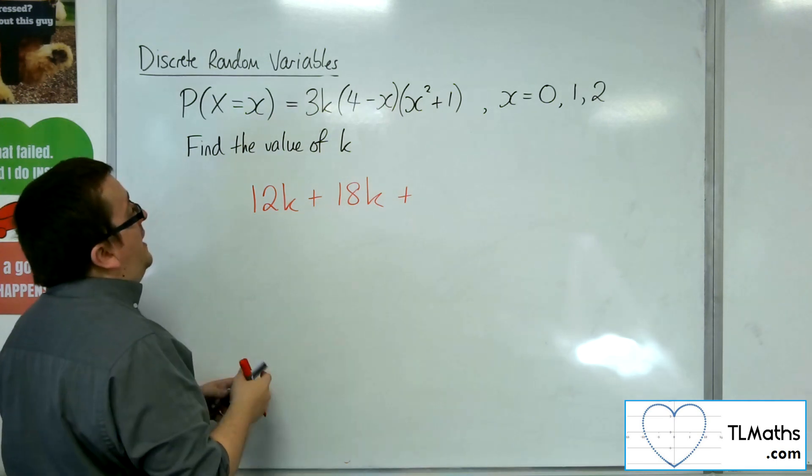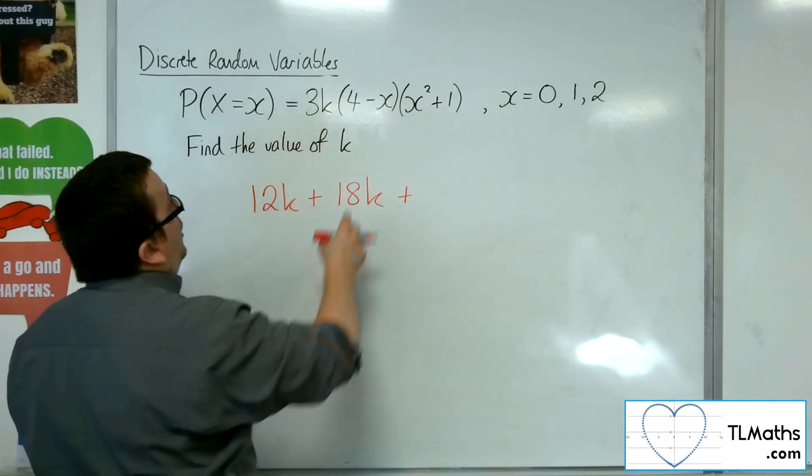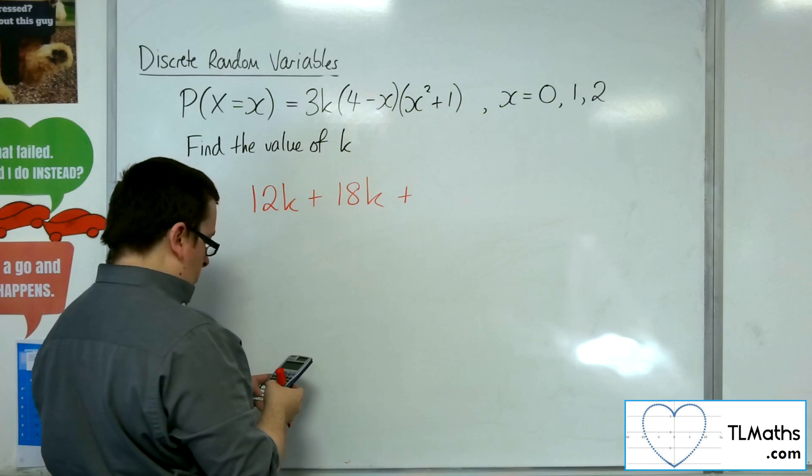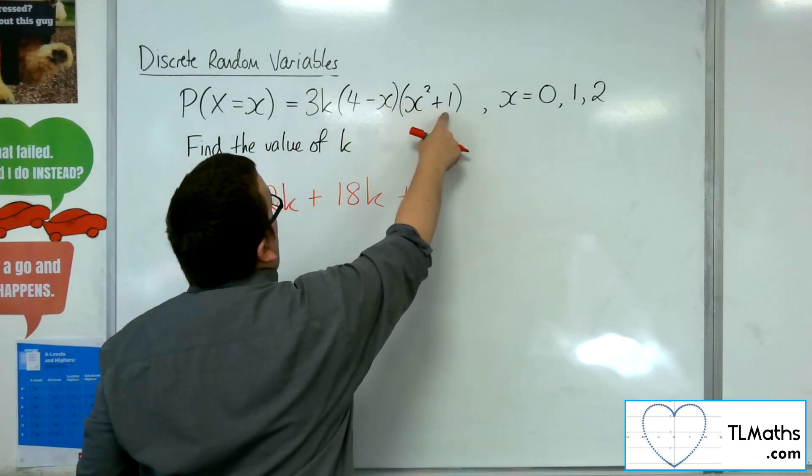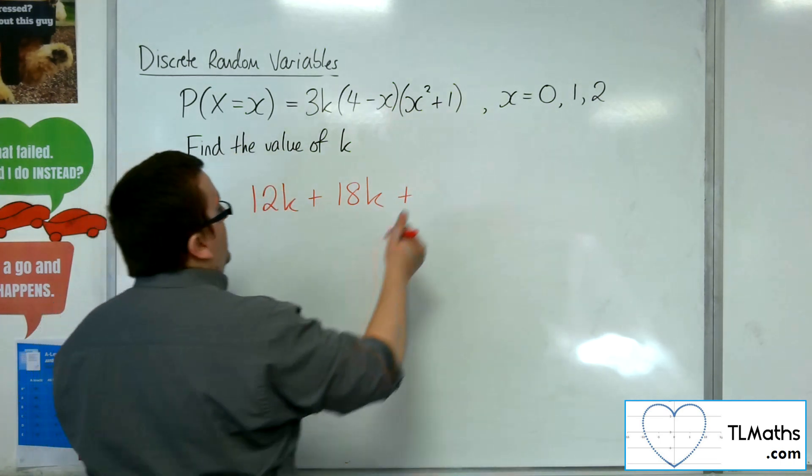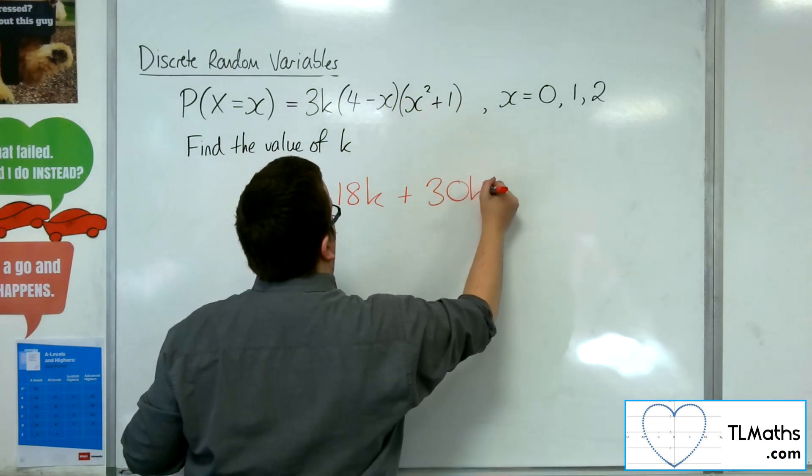Then substituting in 2, we'll get 3k times (4 take away 2), so 2, times by (2 squared plus 1), so that'll be 5. So I get 30k.